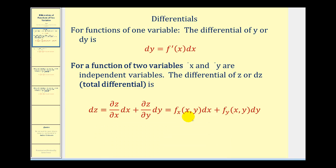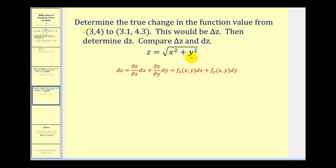We can also use alternative notation if we wish. Remember, differential z can be used to approximate the true change in z when the values of x and y change. To get a better feel for this, we're going to compare delta z — the true change in the function — to differential z, the approximate change, when x changes from three to three point one and y changes from four to four point three. Let's first calculate the true change in the function value and then determine differential z.